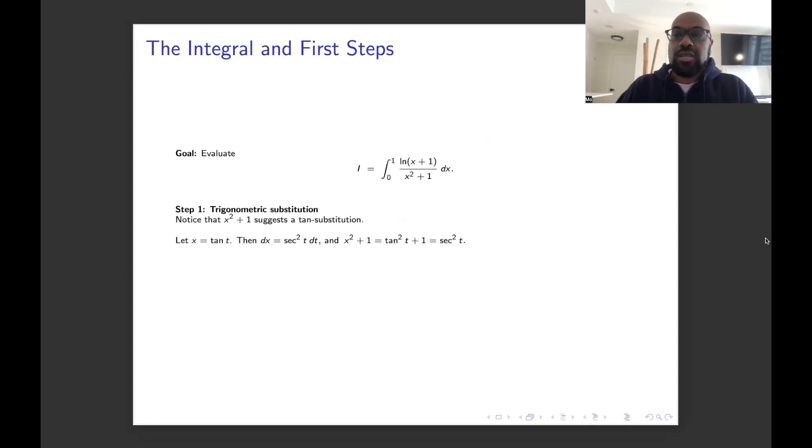And so our integral gets simplified to the following, making sure we keep track of where our bounds go. So when x is 0, t is 0, because tan 0 is 0. And when x is 1, t will be π/4, because we'll be figuring out the value of t for which tan t is 1. And that's π/4.